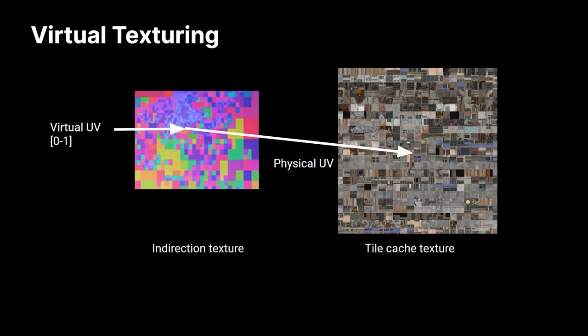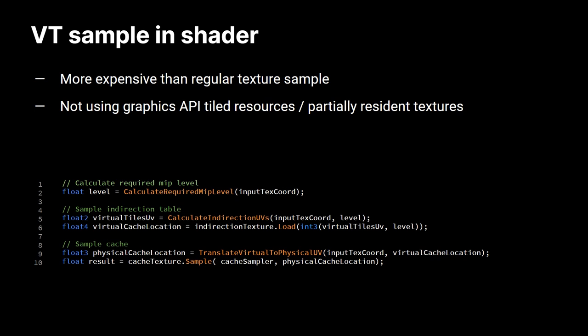Because we're not storing entire textures, we need a different sampling approach. In our system we have a tile cache texture, which is a texture array, and we store tiles in random order in that cache. We need a way to sample those tiles — to find them in the cache — and for that we have an indirection texture. With the virtual UV, we sample the indirection texture, which contains the information to find the tile in the cache. A VT texture sample is therefore more expensive than a regular texture sample, because we first sample the indirection texture, do some calculations, then sample the cache. We do this in the shader — software virtual texturing — not using hardware API acceleration like tiled resources or partially resident textures, because the software implementation is fast, more flexible, and more broadly applicable.